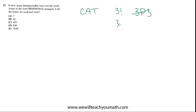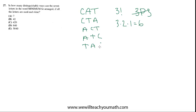3 factorial is 3 times 2 times 1, which is 6. We can validate that: CAT, CTA, ACT, ATC, TAC, TCA — those are all six possible ways to arrange those three letters. This works even if you have more. So if you had a four-letter word like TIME, you could do 4 factorial and get 24, and there truly are 24 ways to arrange those letters.